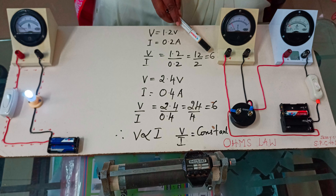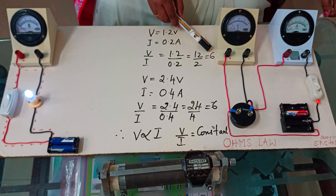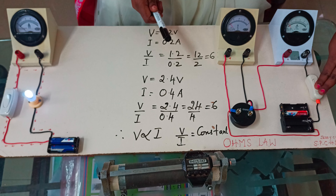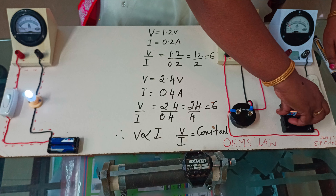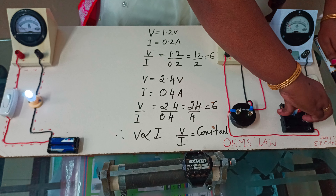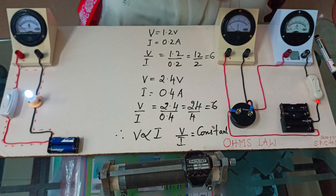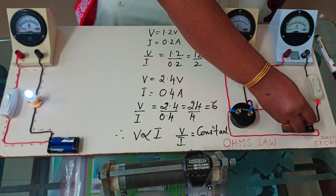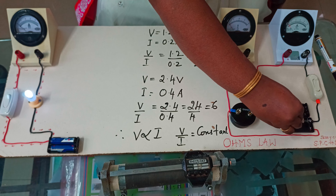Dear students, this is the electric circuit consisting of battery, switch, bulb and ammeter. Is there current flowing in this circuit? No. How do you say there is no current flowing? Because the bulb is not glowing. So there is no current flowing.